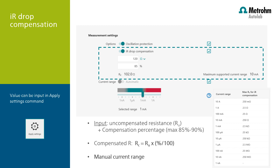It calculates that from the two parameters shown. There is also a maximum current range which could be used, and this depends on the compensated resistance calculated. Automatic current ranging is not possible with IR drop compensation enabled, so you have to choose the optimum current range for your experiment if you want to use IR drop compensation.